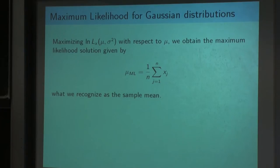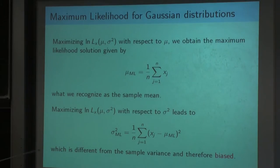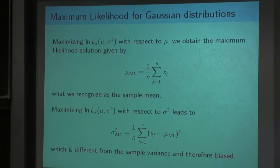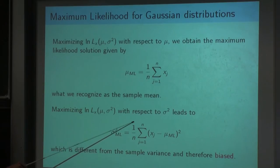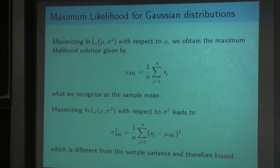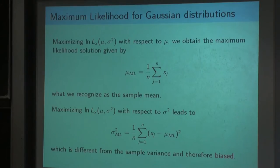Next, we maximize the log-likelihood with respect to the variance. The result is a bit surprising because what we get is not the sample variance. In the sample variance, we would have 1 over n minus 1. It is one of the exercises to prove that with 1 over n minus 1, the sample variance is unbiased. This result has 1 over n, so it is a biased estimator for the variance. We will later see the differences when we compare to Bayesian inference.